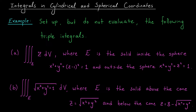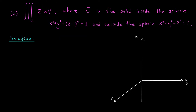In part A, we're looking at the triple integral of the function z over the solid E that lies inside one sphere and outside another sphere. In part B, we're looking at the triple integral of the square root of x squared plus y squared plus 1, over a solid E that lies above one cone and below another cone. Let's jump into part A. We're integrating over the solid E that lies inside the sphere x squared plus y squared plus (z minus 1) squared equals 1, and outside the sphere x squared plus y squared plus z squared equals 1. We'll start by sketching this solid in R3, which should give us an idea of which coordinate system to use and how to set up our bounds.